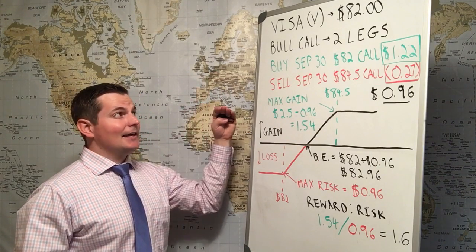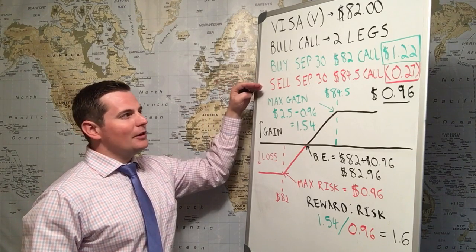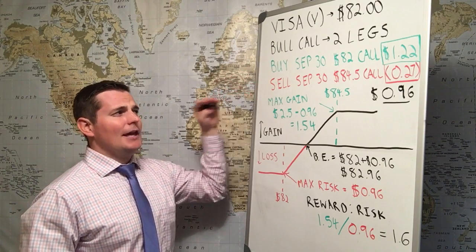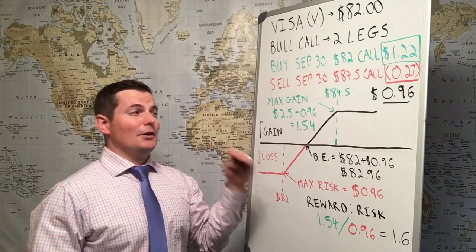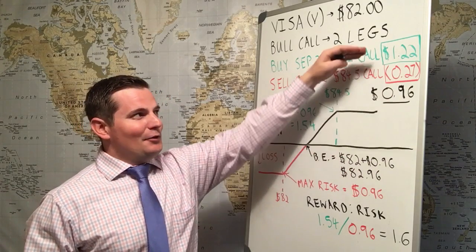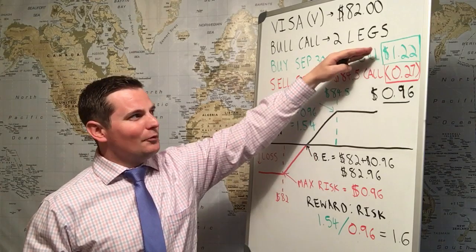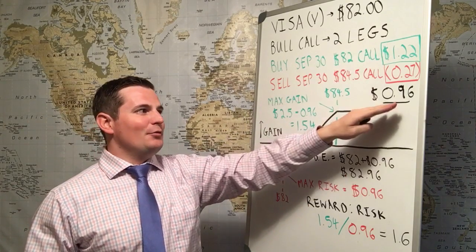The second leg to this trade was they sold the September 30th $84.50 calls and collected $27. If you subtract the amount they sold from the amount they bought, you'll have $96. This spread trade costs the volatility complex $96 per option.